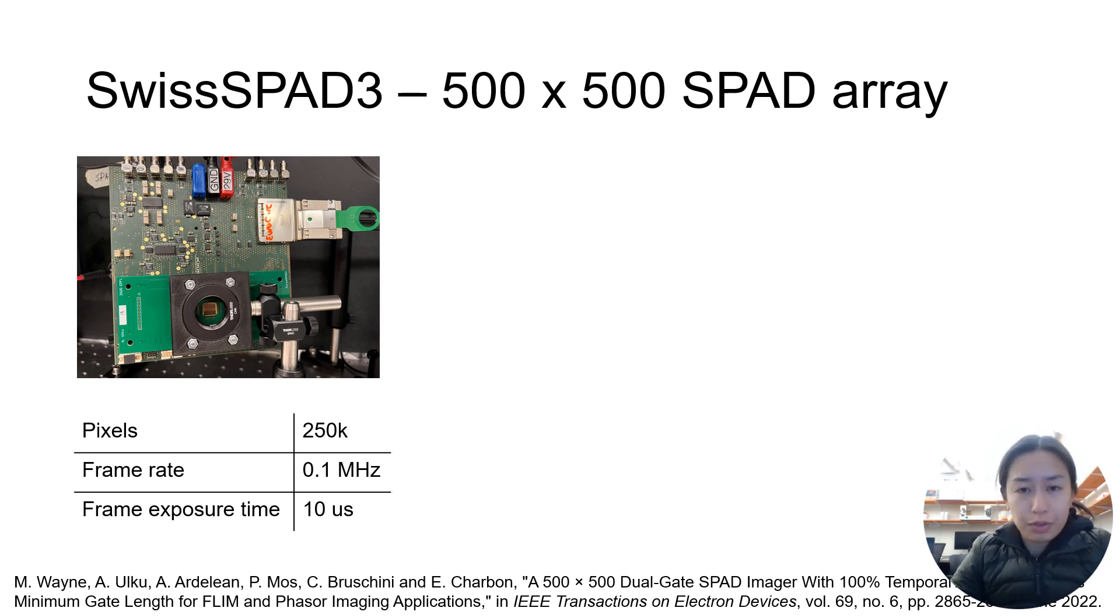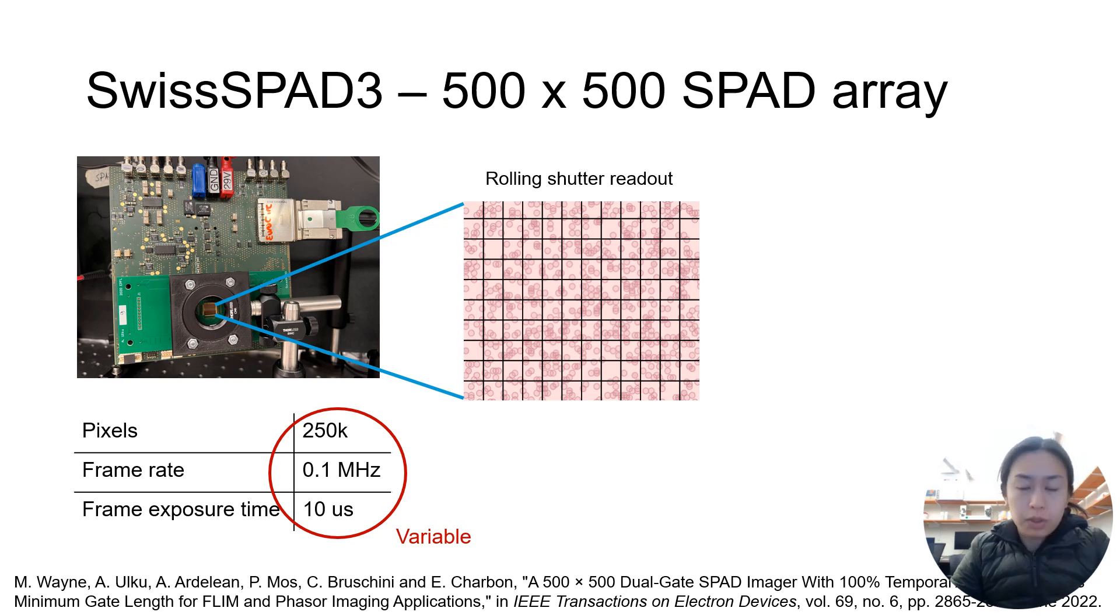In total, there are 250,000 pixels, with a frame rate of 0.1 MHz and exposure time of 10 microseconds. We note that these parameters can be adjusted. The sensor operates with a rolling shutter readout and an adjustable number of readout rows. The frame exposure time is simply the number of readout rows multiplied by the row readout time, which here is 40 ns.